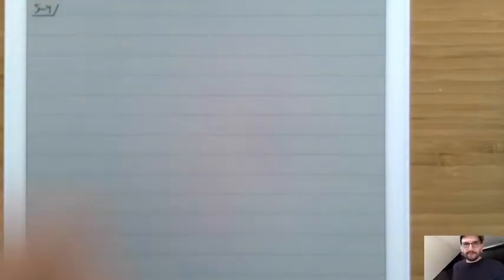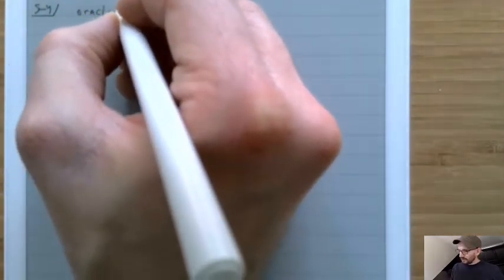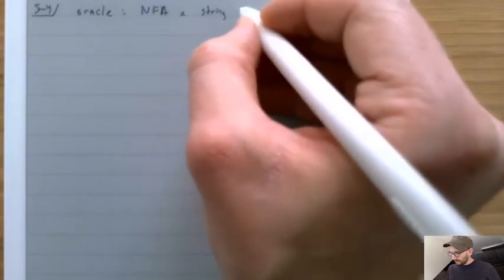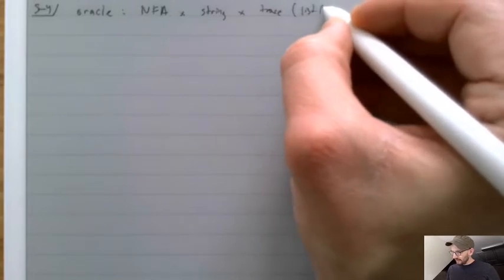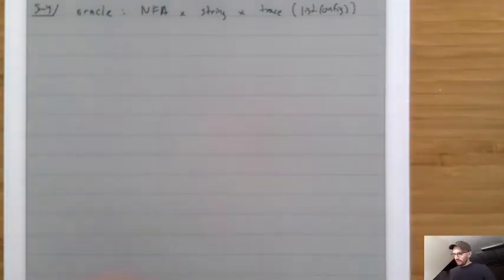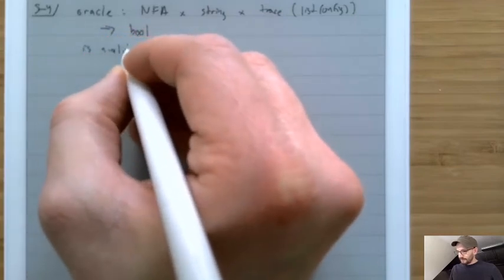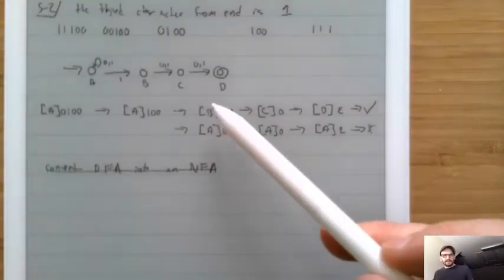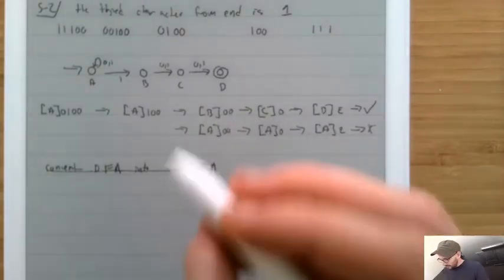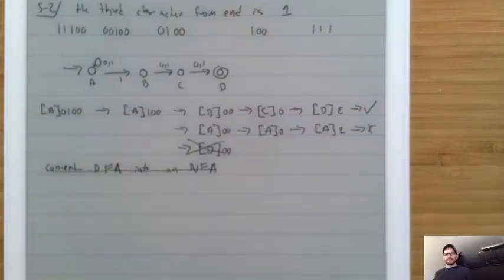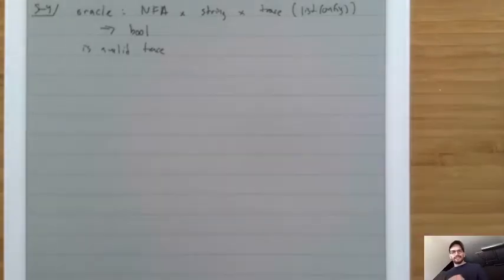Let's write a function called Oracle. Oracle takes an NFA, a string, and a trace — a list of configurations — and returns whether or not that trace is valid. For example, it would say yes to valid traces and no to a trace that just jumps to state D with remaining input 00, since that doesn't follow the rules.